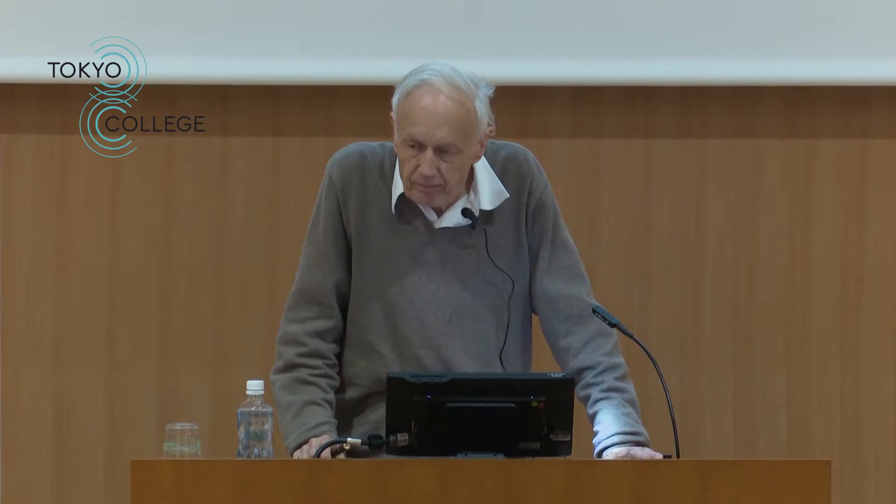Well, at this point, let me just go on and just take a slightly different direction and talk about the different arrows of time. First of all, we have the psychological arrow that we can remember the past and affect the future, but not vice versa, as we said at the beginning. The biological arrow: plants and animals seem to start small, grow bigger and eventually die.